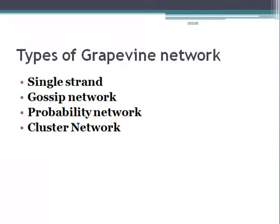Types of grapevine network: Single strand — each person communicates with the other in a sequence. Gossip network — each person communicates with all other persons on a non-selective basis. Probability network — individuals communicate randomly with other individuals. Cluster network — individuals communicate only with those they trust. Of these four types, the cluster network is the most popular in organizations.